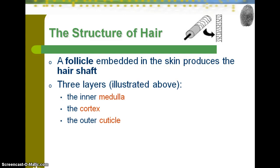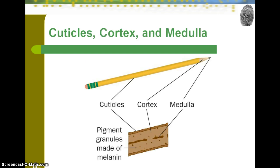Hair's structure is basically comprised of three components. You can think of this like a pencil: where the graphite is, that would be the medulla, which generally provides pigmentation. The cortex is like the wood around the graphite — the inner layer. The outside would be like that yellow paint of the pencil, which is the cuticle. In human hair, the cuticle has a shingled roof appearance when viewed under a microscope.